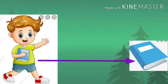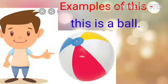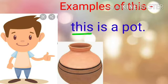First let's learn about 'this'. We use the word 'this' to describe the object which is near to us. Or you can say we use 'this' when we can hold the object or we can touch the object. For example: 'This is a ball.' You can see the ball is near to the boy, that's why we are using 'this' here. Another example: 'This is a pot.' The pot is near to the boy, that's why we have used 'this' here.